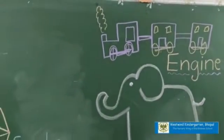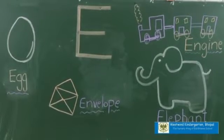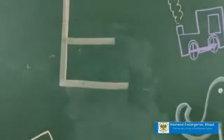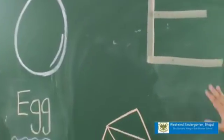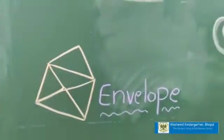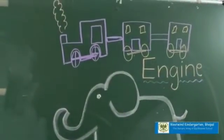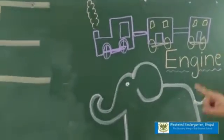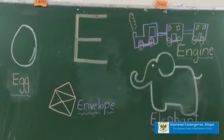Children, all these pictures start from letter E. Which letter is this? This is E. And the sound of letter E is E. So, all these pictures start from letter E. Okay, thank you.